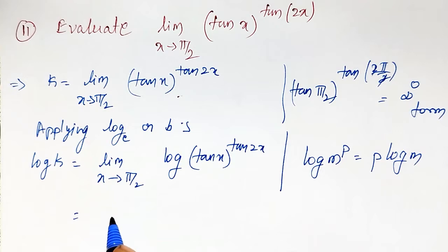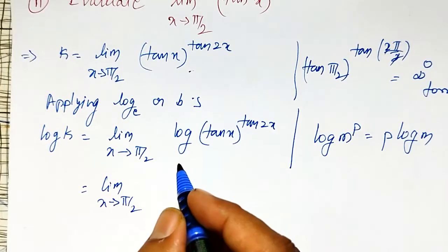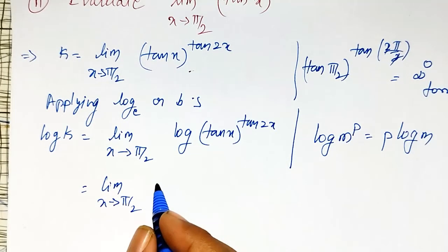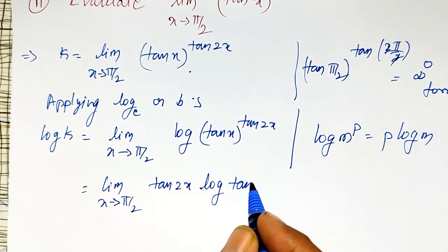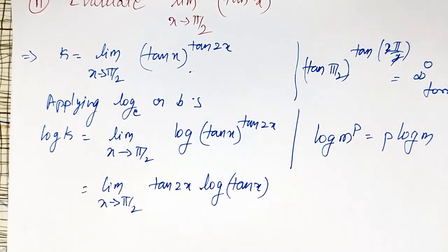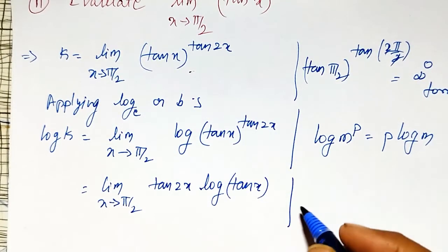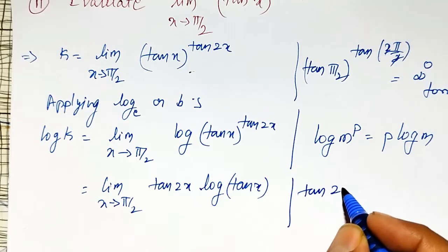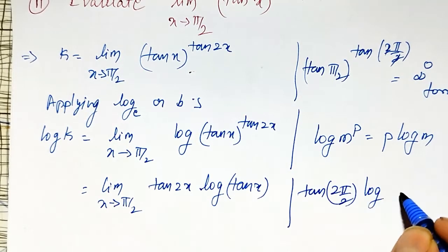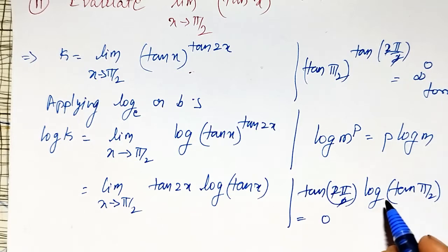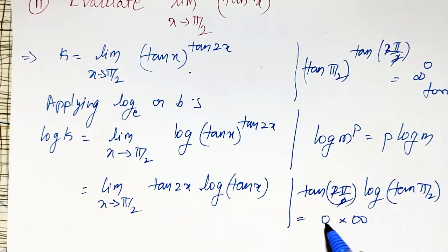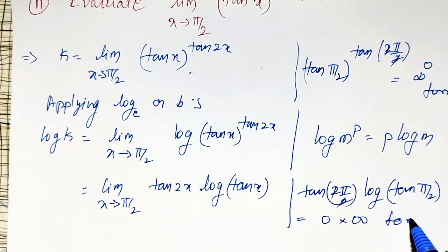I can write it as limit as x tends to π/2 of tan(2x) · log(tan x). Now again, check which indeterminate form it is. That is tan(2·π/2) · log(tan(π/2)). The 2's cancel, so tan(π) is 0, and log of infinity is infinity. Therefore it is the 0 · ∞ form.